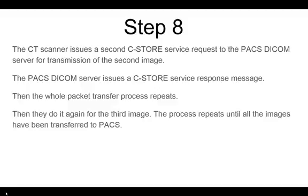Once the first image is moved, the CT scanner sends a second C-Store request for the second image. Every image has its own C-Store request — that's important to remember. PACS says yes, CT sends the first data packet, PACS confirms receipt, and this goes back and forth until all four packets for the second image are in PACS. Then another C-Store comes for the third image, and this repeats for every image.